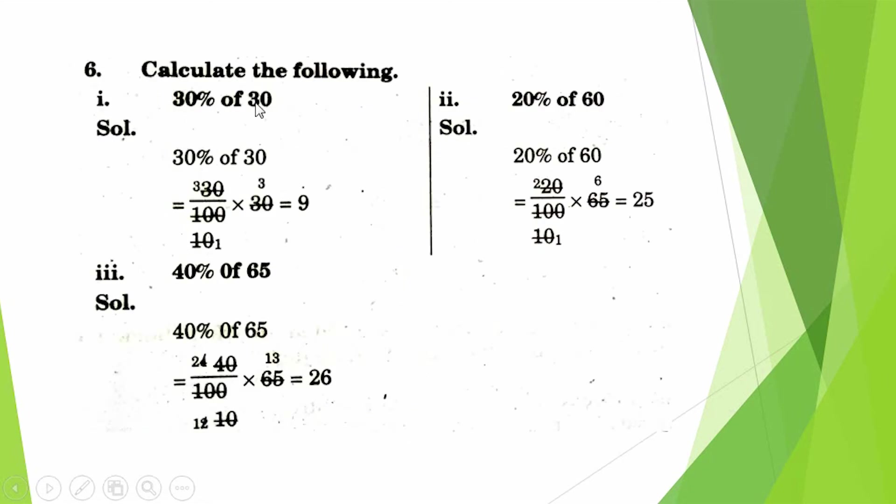Question number 6: Calculate the following. 30% of 30. We write 100 in place of percentage. Therefore, 30/100 × 30. Answer comes 9.